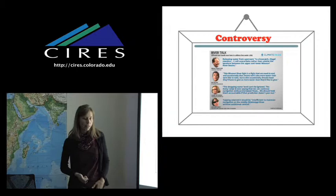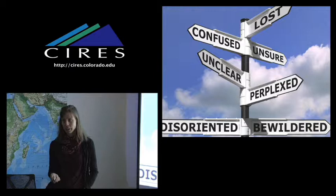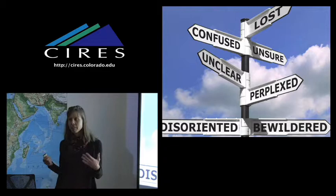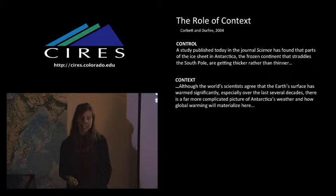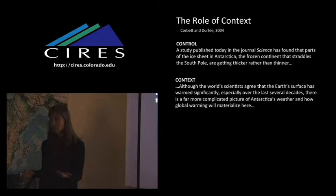So the problem with some of these frames is that what they do is they actually create a more confusing story for the public. Well, he said, she said. Well, they've contradicted each other. What am I to believe? Is it three feet? Is it a couple inches? How am I supposed to get the real information out of this news? And so one of the ways that journalists can actually help the public understand stories better is by giving them more context about contradictions that may appear or controversy that may develop.